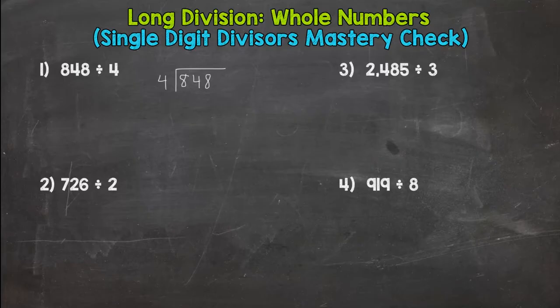We start with how many groups of 4 are in 8? We have 2. Two times 4 is 8. Subtract, we get zero. Bring down my 4. How many groups of 4 are in 4? One. One times 4 is 4. Subtract, you get zero. Bring down my 8. How many groups of 4 are in 8?